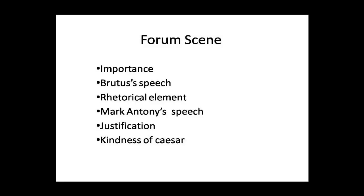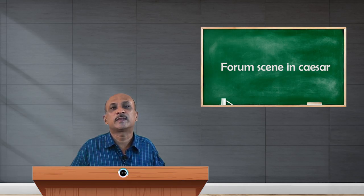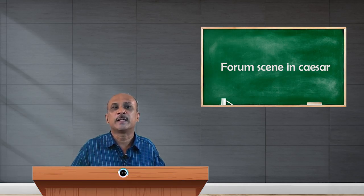It is the speech delivered by Brutus followed by Mark Antony. Brutus wants to justify why he should murder Julius Caesar. The need of assassinating Julius Caesar is justified in the speech.